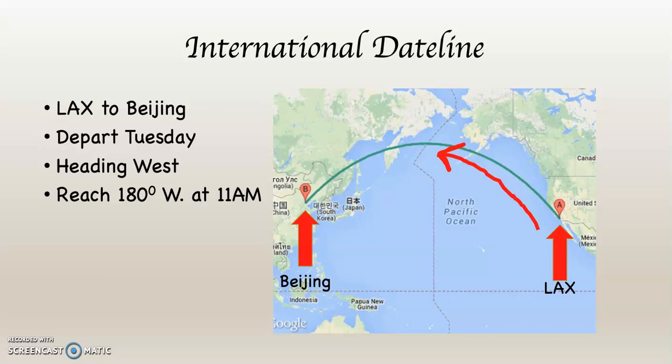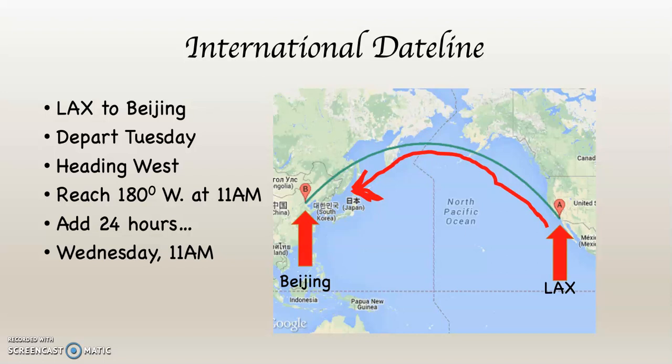What is going to happen as we cross the international date line? As you cross it, the time remains the same — it will remain 11 a.m. However, you add 24 hours when headed west. So Tuesday at 11 a.m. instantly becomes Wednesday at 11 a.m. It's like if you're listening to this lecture and it's Thursday at 6 p.m. — suddenly it's Friday at 6 p.m.